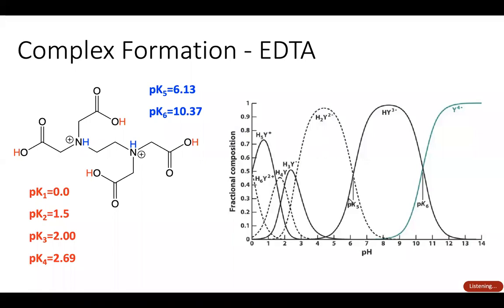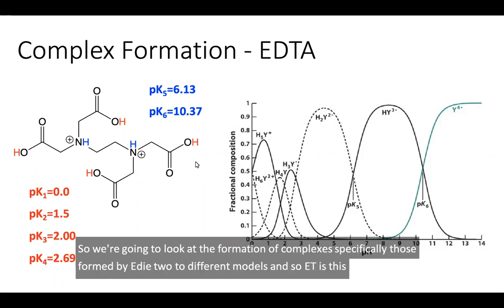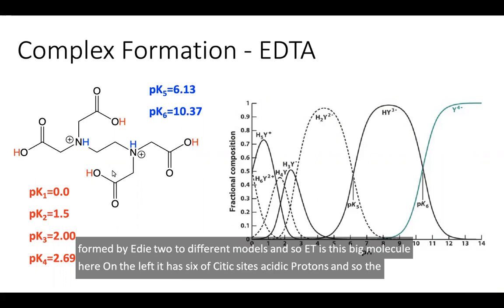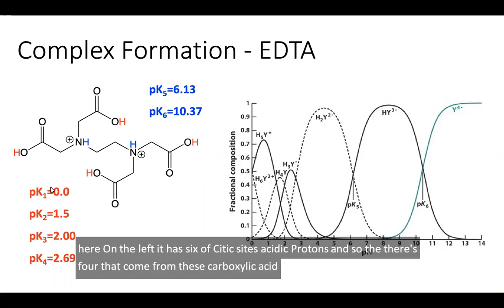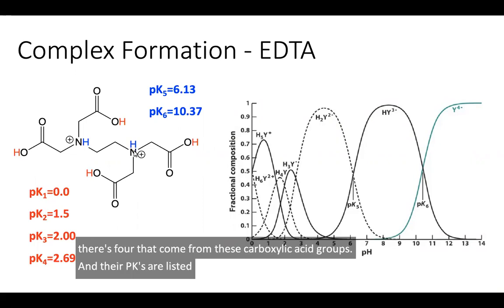We're going to look at the formation of complexes, specifically those formed by EDTA to different metals. EDTA is this big molecule here on the left. It has six acidic sites, acidic protons. There's four that come from these carboxylic acid groups, and their pKa's are listed here. Two come from the amines, and their pKa's are listed here.